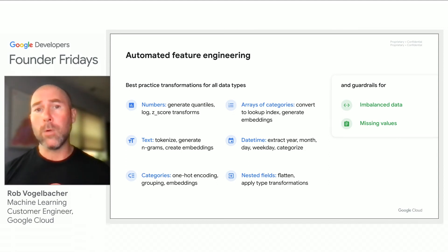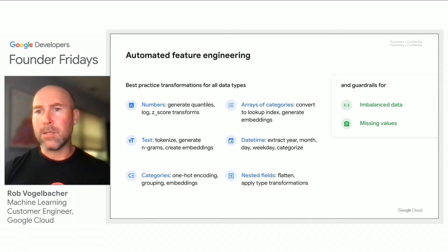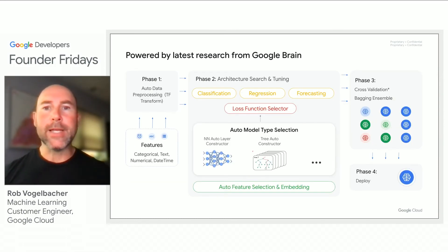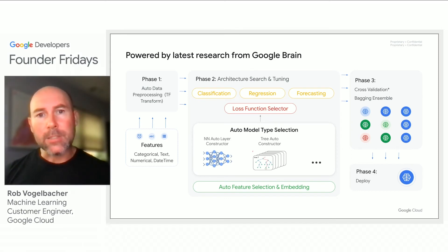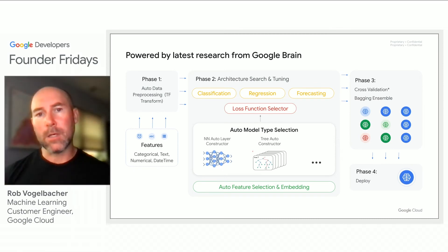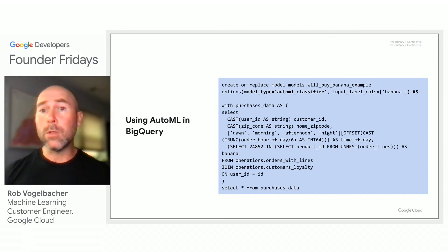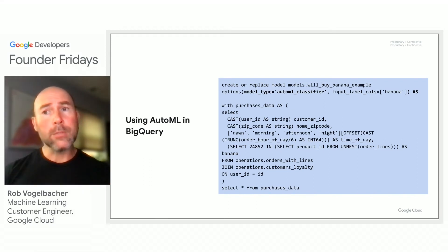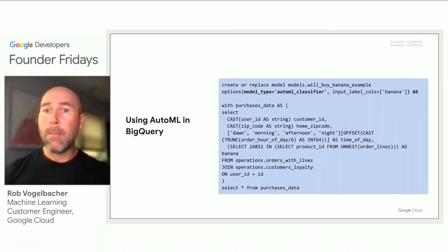AutoML additionally includes guardrails to help ensure you build models that don't perform poorly due to issues with your data, such as imbalanced classes or missing values in your dataset. AutoML is built on the latest research and techniques in AI and machine learning developed in Google Research, and automatically searches through a wide range of model types and approaches to find the best candidate model for your specific customer dataset. In addition to being available via the Google Cloud console and programmatically through our SDK and APIs, AutoML is also available to use directly from within BigQuery simply by specifying the model type as an AutoML model type when building your classification or regression model.